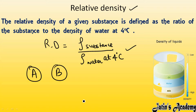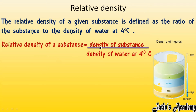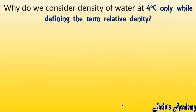Relative density equals the density of a substance divided by the density of water at 4 degrees Celsius. We take the density of water at 4 degrees Celsius as a constant. Now the question is: why do we consider the density of water at 4 degrees Celsius only when defining relative density?